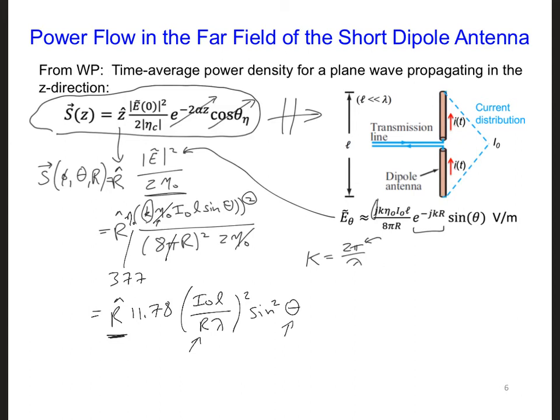And theta, which is measured from the dipole axis. So theta would be measured from this direction. It would be helpful to be able to plot this power density so that we can get a feel for the direction in which the power goes. In this case, we don't need to particularly care about the exact amplitude that is radiated in each direction.